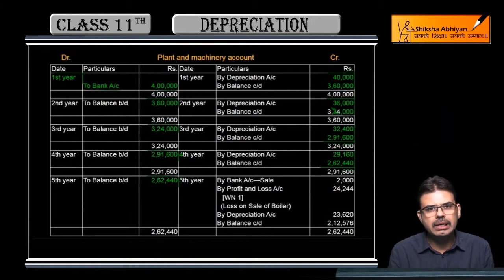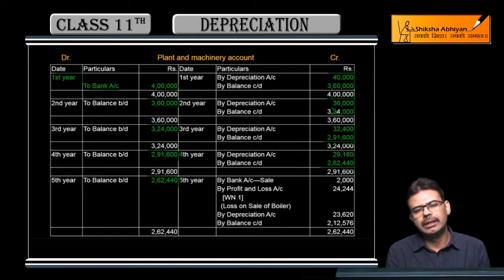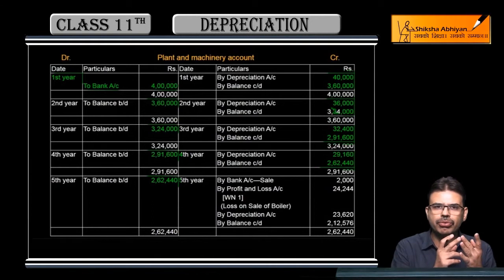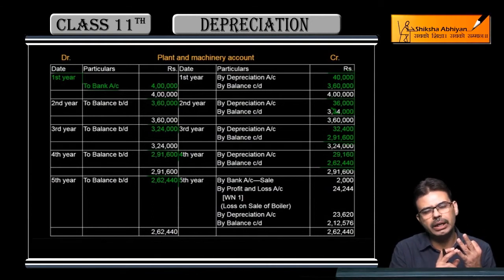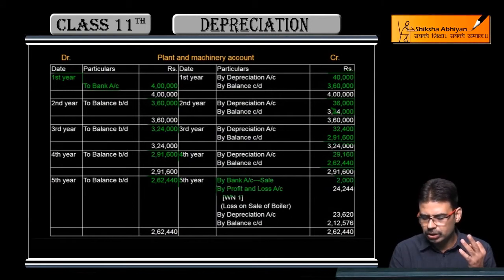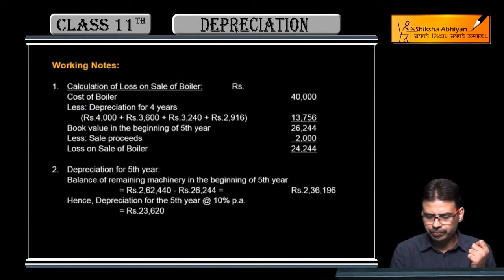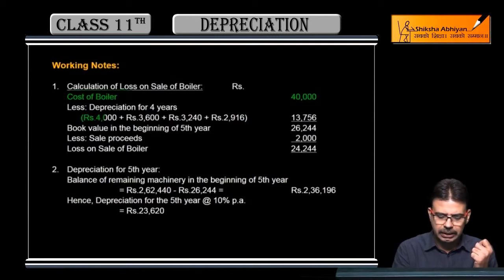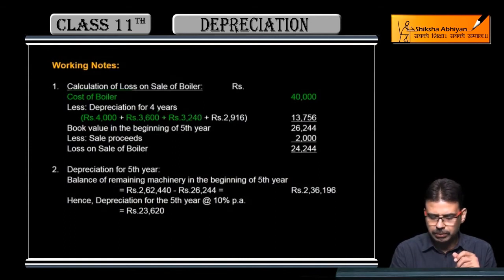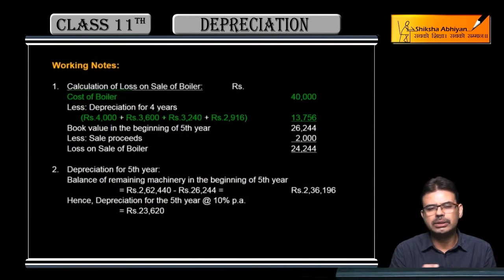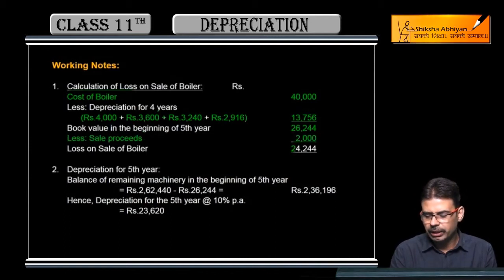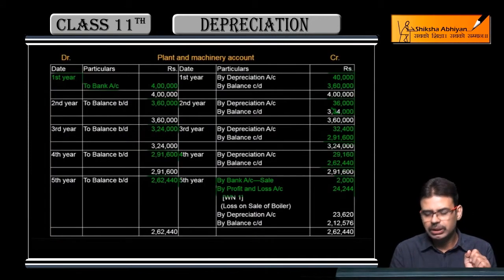In the fifth year's beginning, the 40,000 boiler became useless and was sold for 2,000. When we sell something, three things come: depreciation, bank entry, and loss or profit. But since it was sold at the beginning of the fifth year, depreciation doesn't apply — only two things: sale of 2,000 and a loss of 24,244. The cost of boiler was 40,000. Year 1 depreciation: 4,000; balance 36,000. Year 2: 3,600; balance 32,400. Year 3: 3,240; balance 29,160. Year 4: 2,916; total depreciation 13,756; balance remaining 26,244. Sold for 2,000, so loss = 24,244.